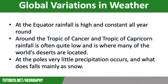Tropical storms occur here and can travel away from the equator once they have gathered enough energy. In coastal areas of Western Europe, rainfall can be high. This is due to the jet stream moving across the Atlantic Ocean, picking up moisture and forming depressions, which can lead to storm formations. Around the tropics of Cancer and Capricorn, the rainfall is quite low, and this is where many of the world's deserts are located.